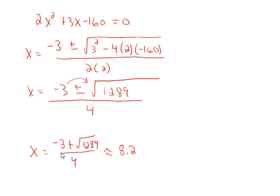Going back to our table of unknowns, remember that the length was 2x + 3. So in our problem, that's going to be 2 times 8.2 plus 3. And that's approximately 19.4 feet. The width was just x. So that's going to be approximately 8.2 feet.